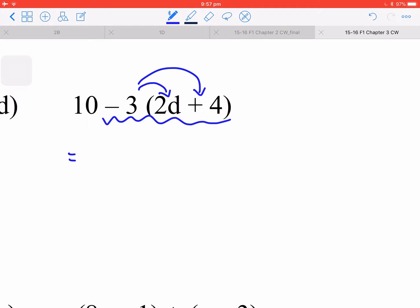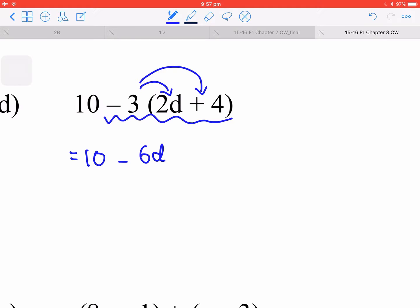For the next one, this is still a little bit tricky. You will have 10 minus 3 times 2d, so that is 6d, and then 3 times 4, that will be negative 12 because there is a negative sign there. Now you arrange the terms and you will see negative 2 minus 6d.